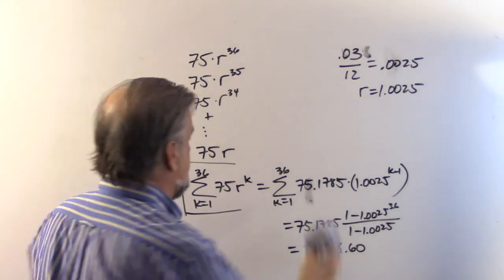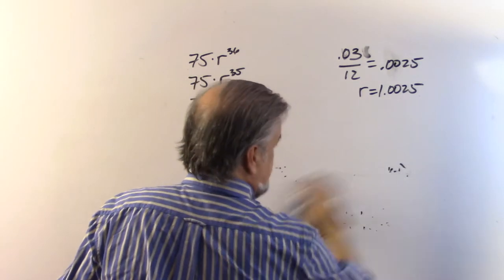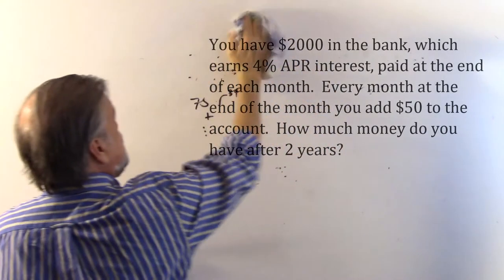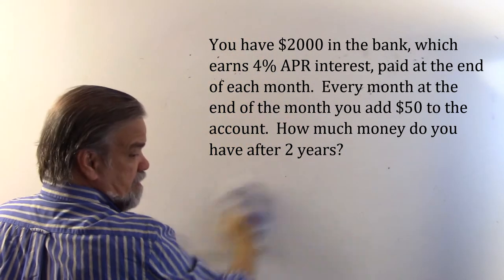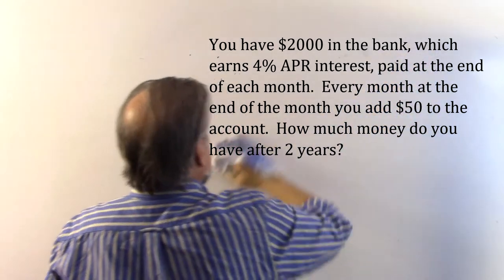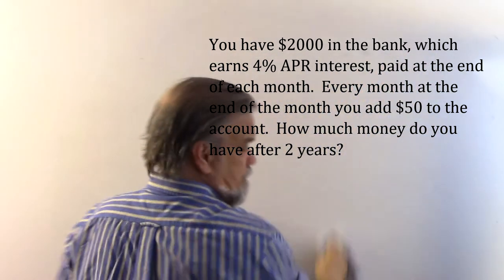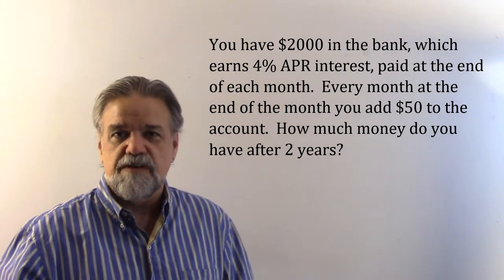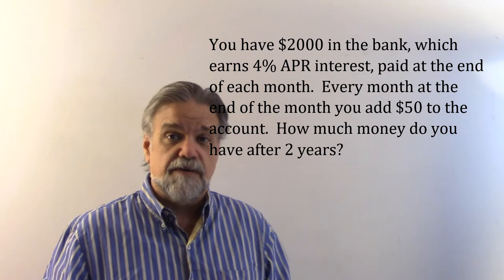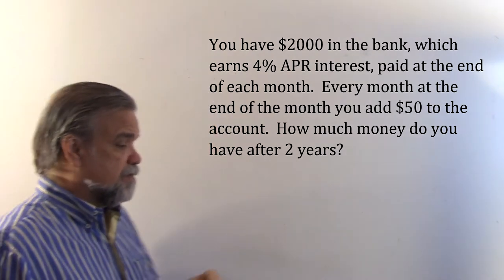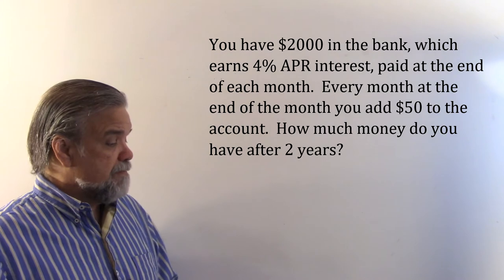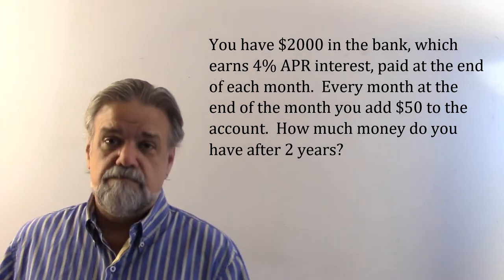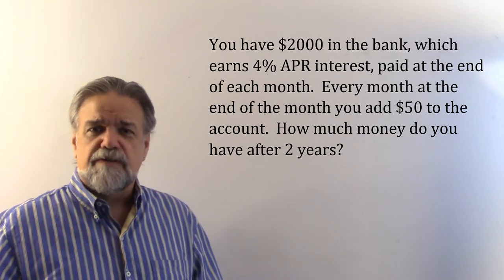As you can see, once we figure out what our different terms are, it fits very neatly into the formula for a geometric series. Let's do another one. This one says you have $2,000 in the bank, which earns 4% APR — that's annual percentage rate, just another way of saying annual interest. 4% APR, interest paid at the end of each month. Every month at the end of the month, you add $50 to the account. How much money do you have after two years?